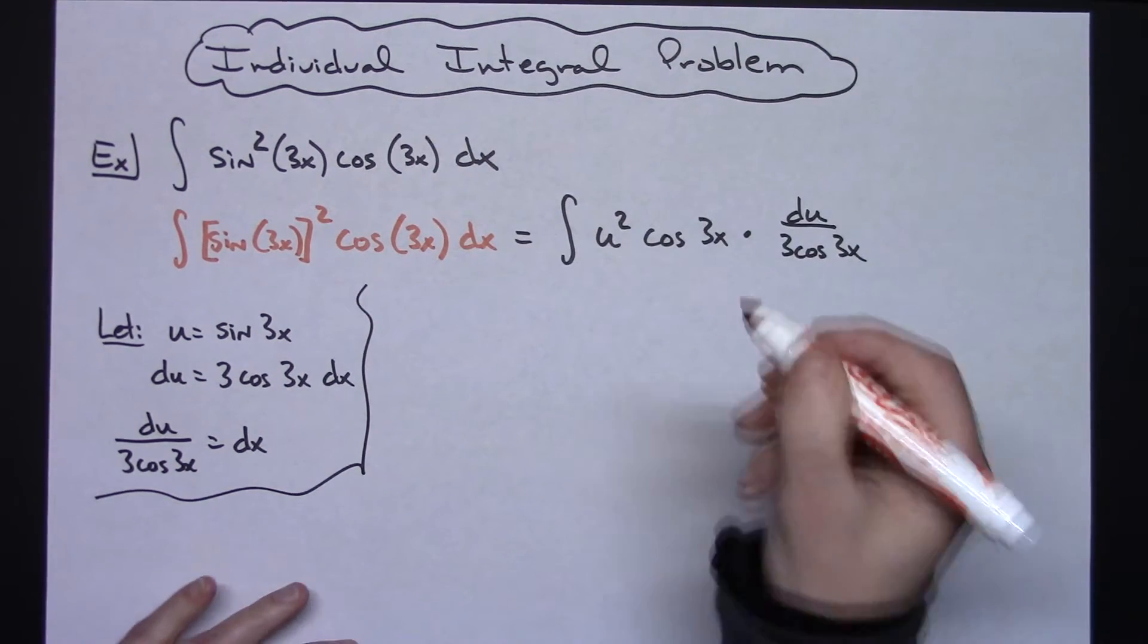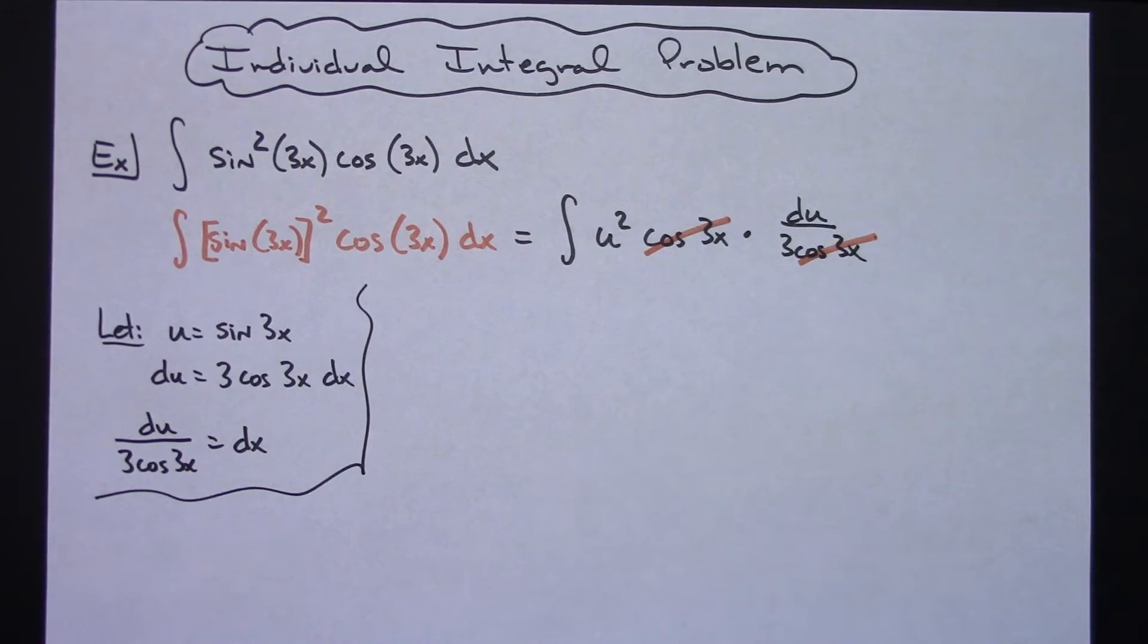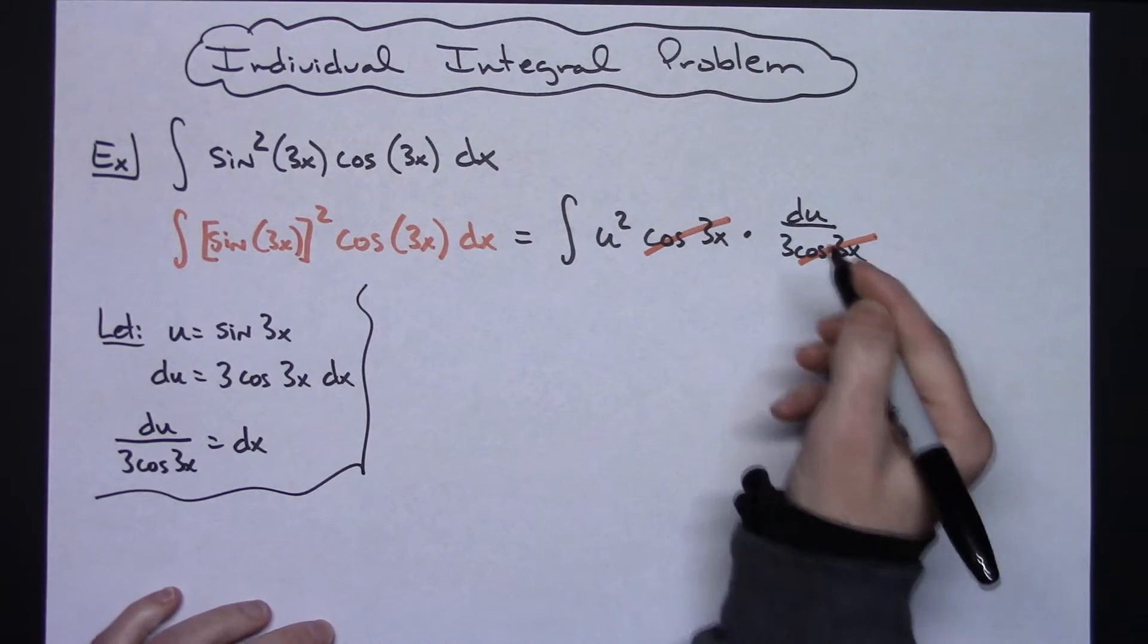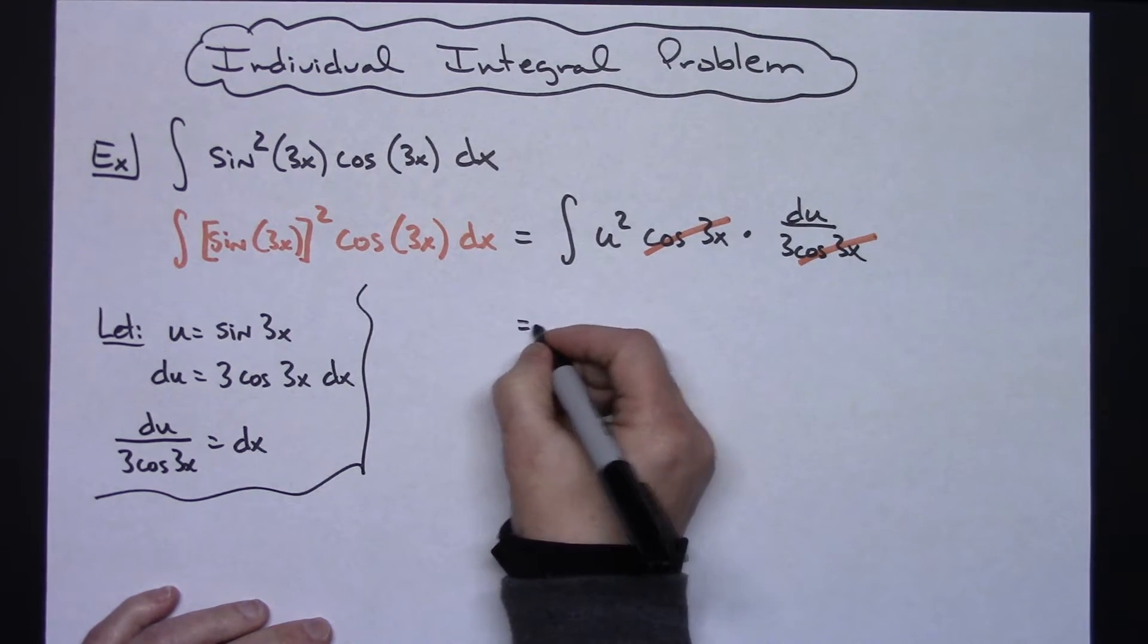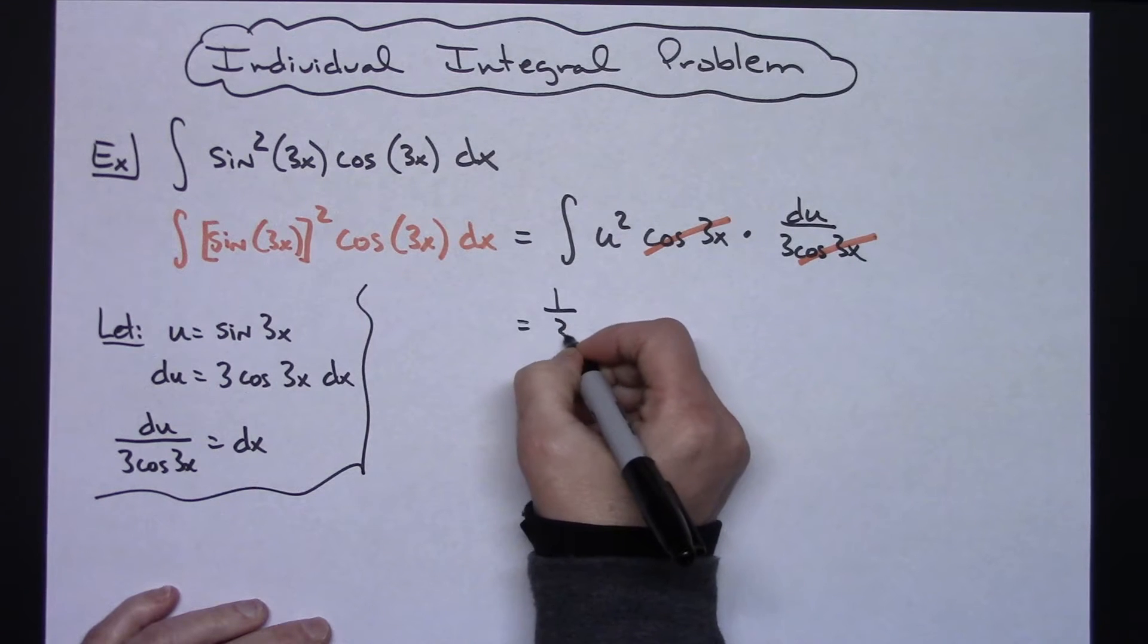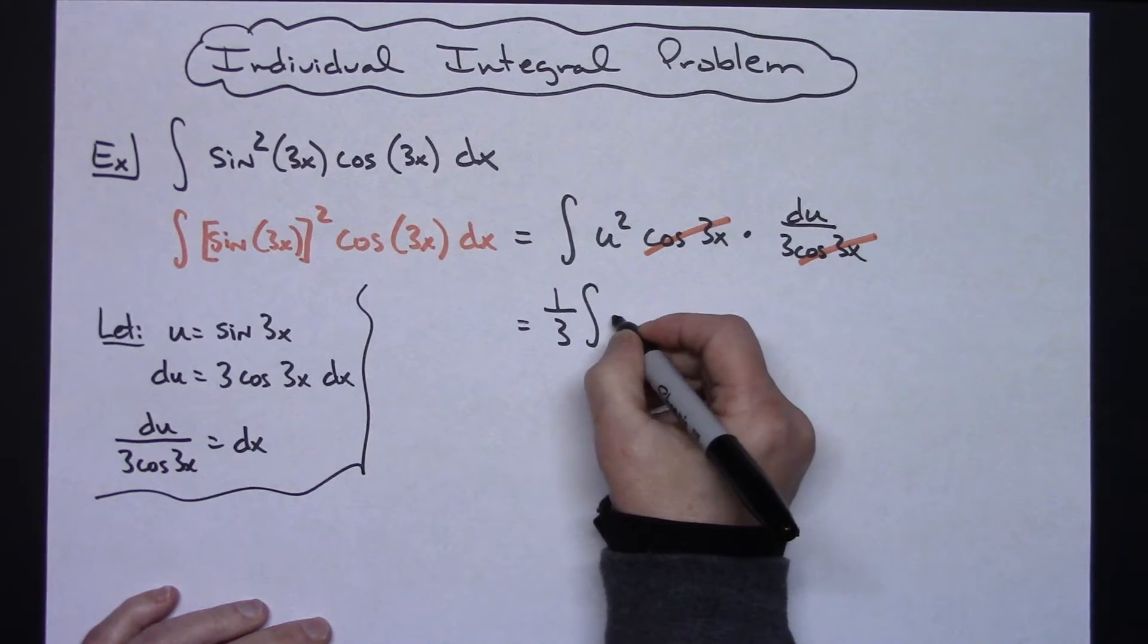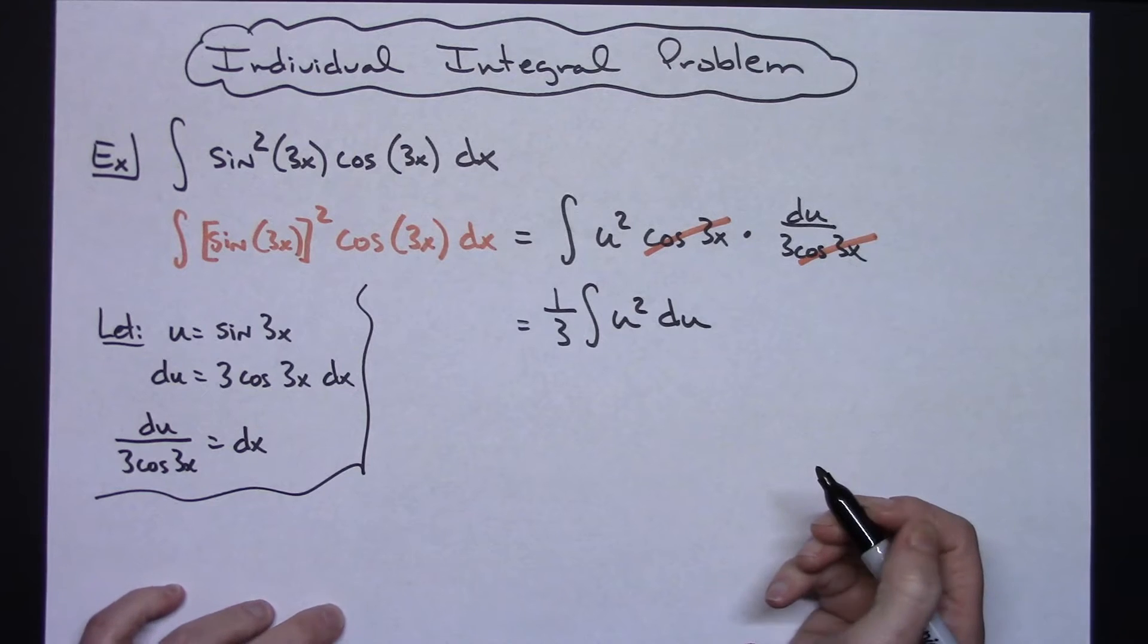That's going to let that cosine of 3x cross out and it's going to let me pull out a one-third out of that integral. So pulling out that one-third: integral u squared du.